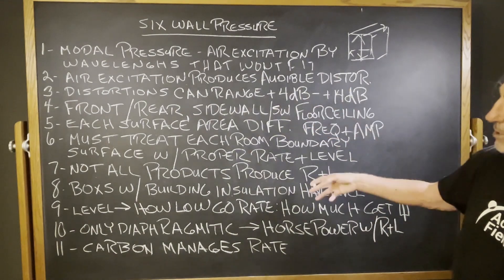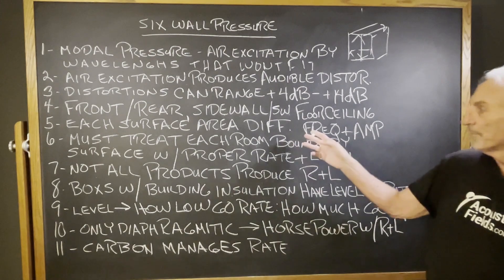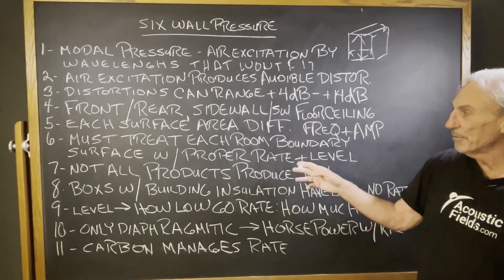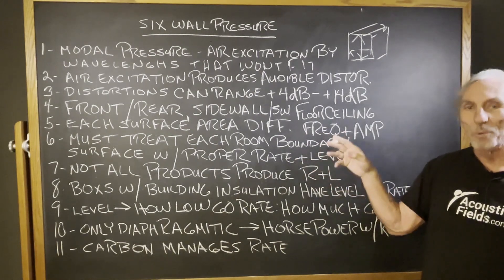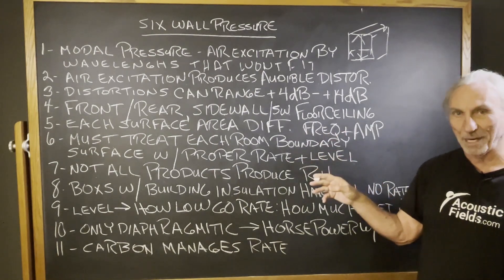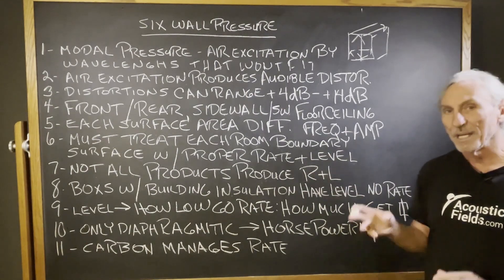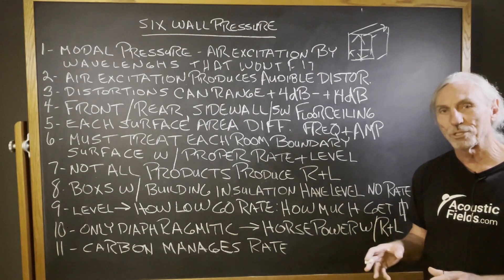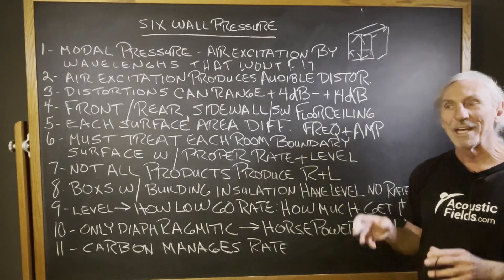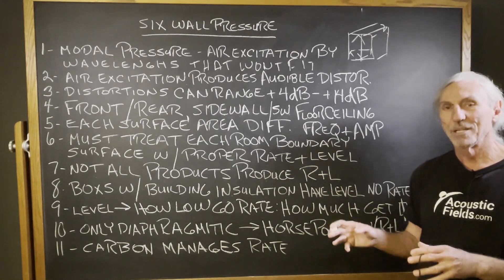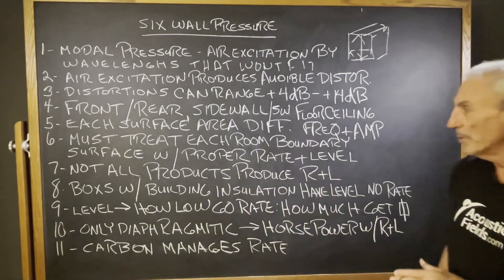We have the three dimensions: front to rear, sidewall to sidewall, floor to ceiling. Each surface area has a different frequency and amplitude. You must treat each surface area with a different treatment type. Each room wall boundary surface exhibits a different frequency and amplitude issue at a different strength, so you have to treat both frequency and amplitude.